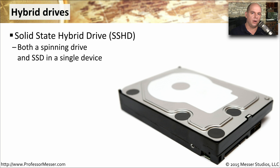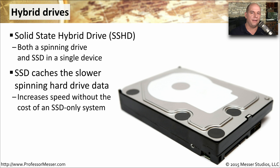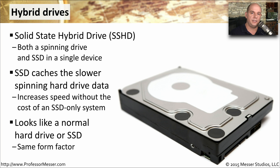If you were to combine a traditional hard drive and an SSD together, you would get a hybrid drive — a solid state hybrid drive, or SSHD. It has both a spinning hard drive and SSD flash memory combined inside a single device. The SSD on a hybrid drive is not necessarily there to store information long-term; instead, it is used to cache information as we're reading from or writing to the hard drive. Because SSDs are much more expensive than spinning hard drives, including a smaller SSD in a hybrid package gives better performance without the full cost of an all-SSD solution. A hybrid drive looks very similar to a traditional hard drive, with spinning platters inside and the SSD memory attached onto the same form factor.